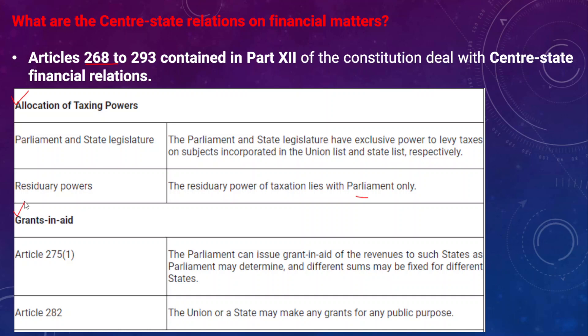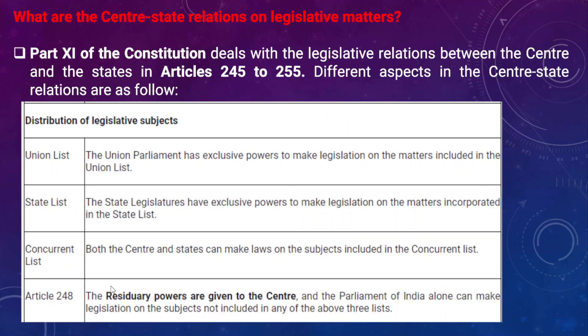Under Article 275 Clause 1, parliament can issue grants in aid of revenues to such states as parliament may determine, and different sums may be fixed for different states based on their revenue deficit. The center provides grants in aid for those states that incur revenue losses. Article 282 also provides that the union or a state may make grants for any public purpose.